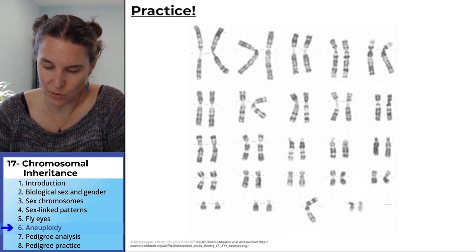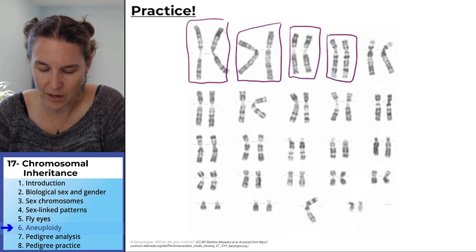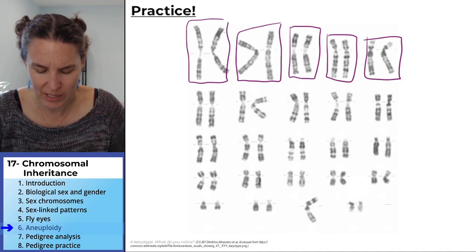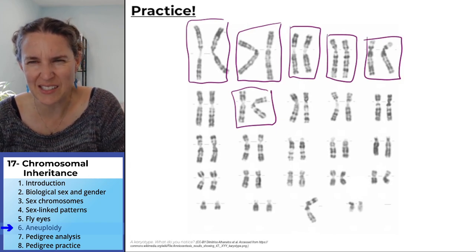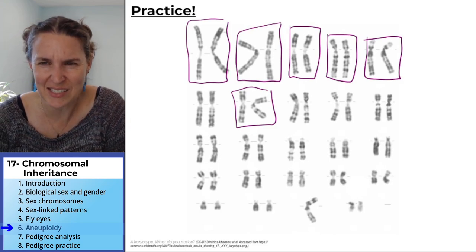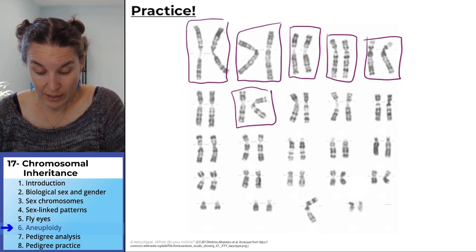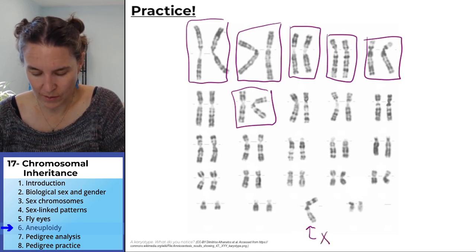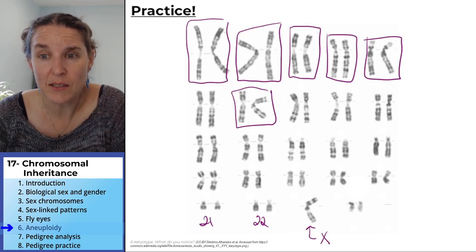Sometimes these karyotypes are interesting to look at. You can go through and see your homologous pairs — the staining lets you sort them into groups. It looks like there are two of everything. Some chromosomes look bent and weird, but the banding — the dark and light lines — still matches. I'm identifying this as the X chromosome, this as the 22nd, and this as the 21st chromosome.